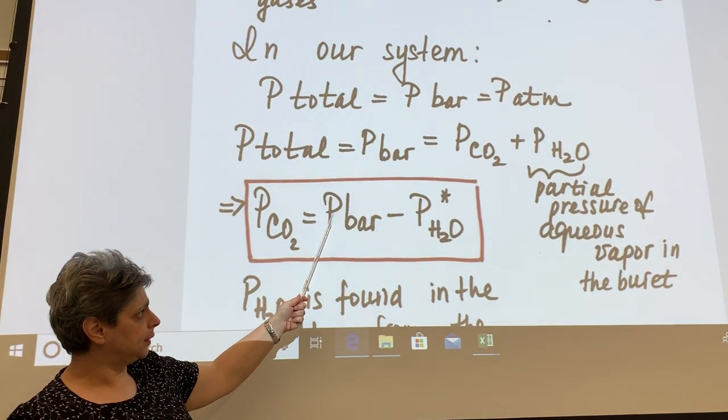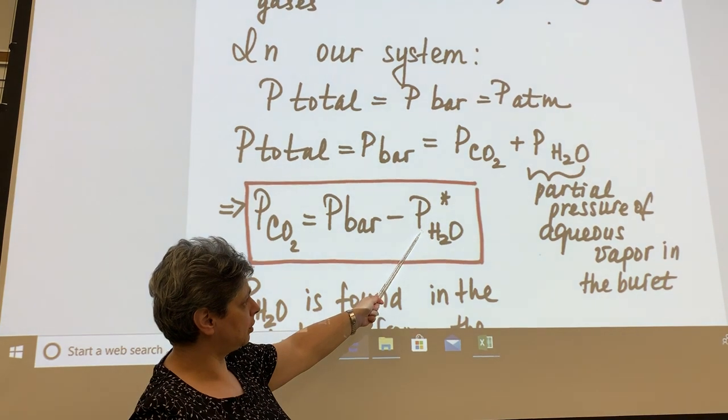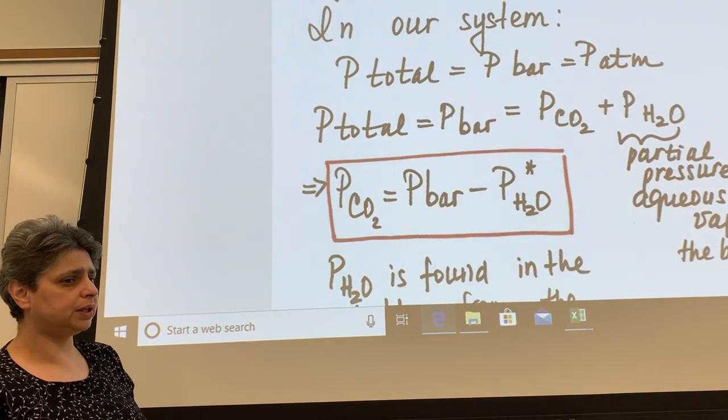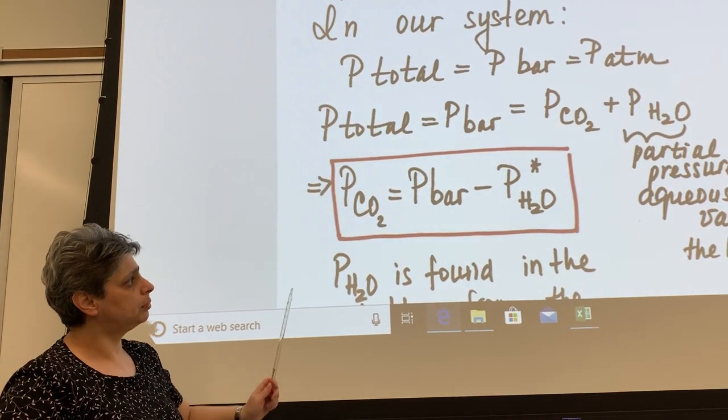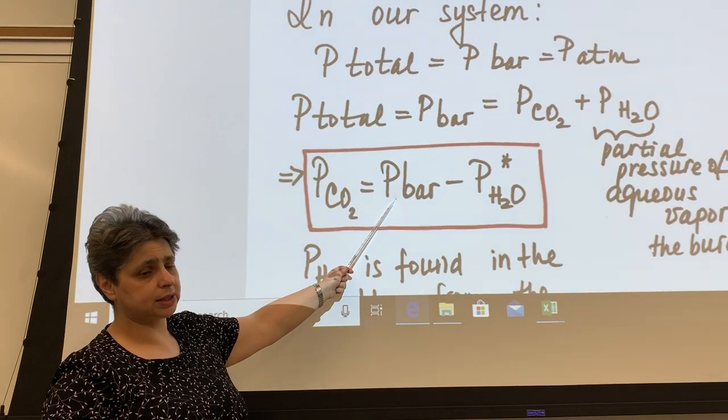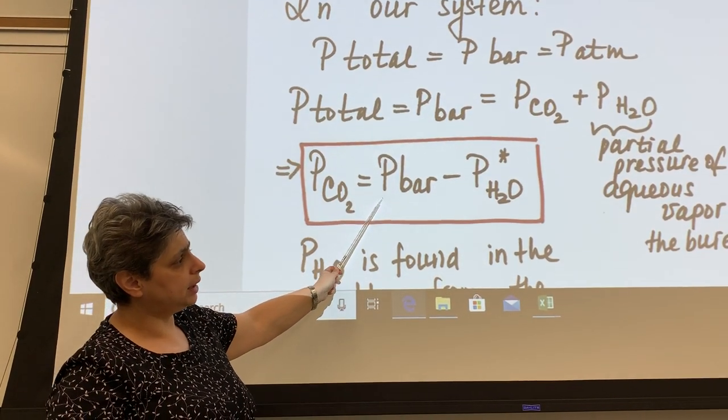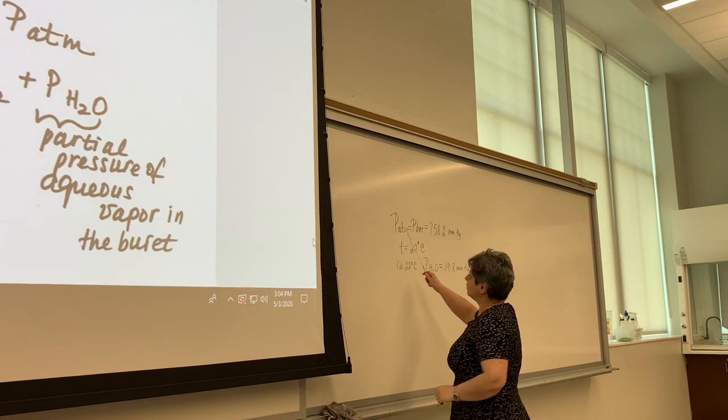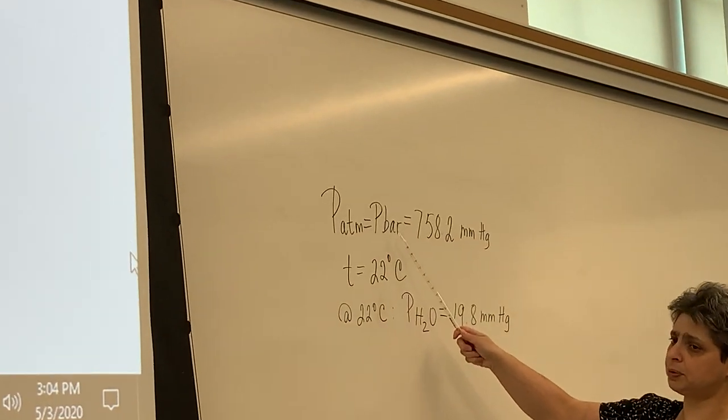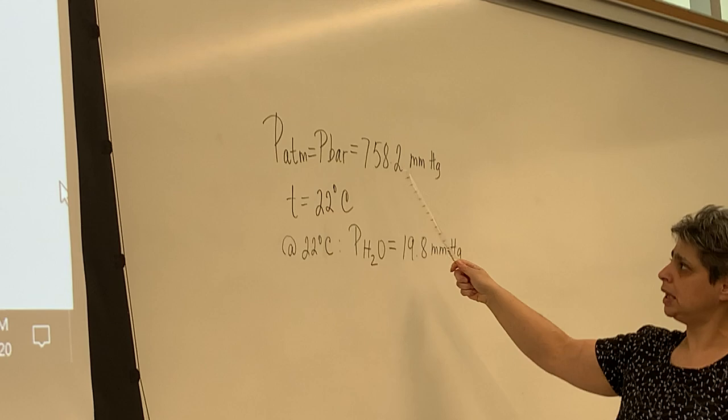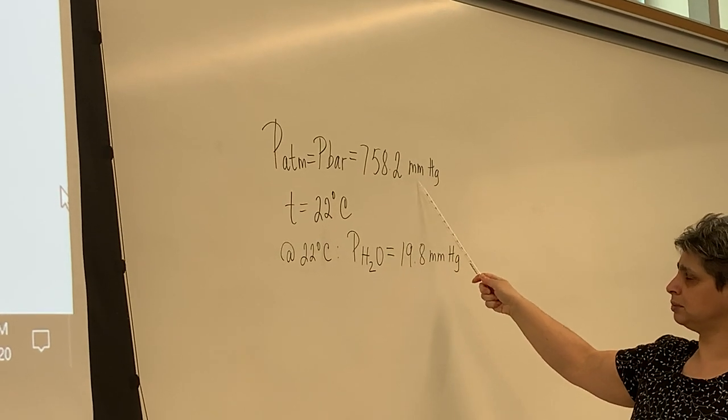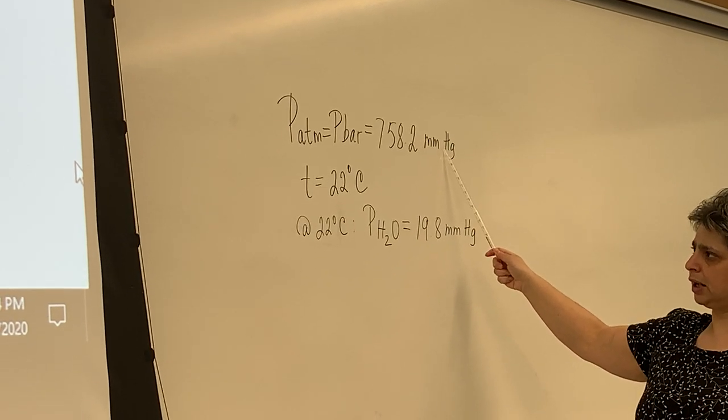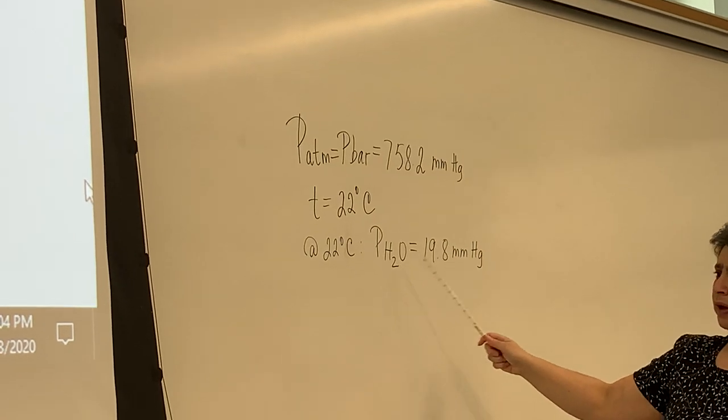So you might say, where am I going to get barometric pressure, where am I going to get aqueous pressure, pressure of aqueous vapor? Well, both of these will be given to you, so you have to pay attention, you have to know where to look for these. Barometric pressure typically is determined on the day of the experiment in the room, where the experiment is being conducted. So I looked it up before we started, and atmospheric pressure or barometric pressure in this room right now, today, is equal to 758.2 mmHg. So, atmospheric pressure is given to you in millimeters of mercury.